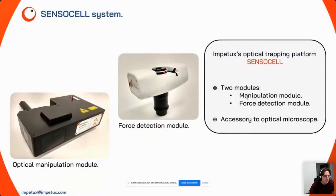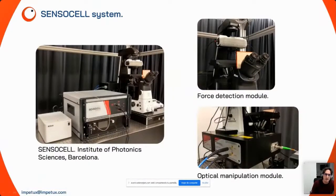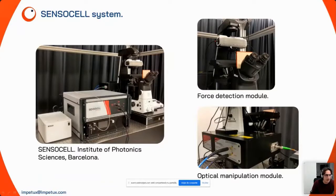The system is called Sensor Cell. It has two models: the optical manipulation module, which generates the optical traps, and the force detection module. Both are accessories to an optical microscope. The force sensor, optical module, electronics, and laser are all visible in the complete system. The optical module attaches to the back port of the microscope via a laser fiber. The force detection module substitutes the condenser lens of the microscope but maintains imaging capabilities by letting light pass through.